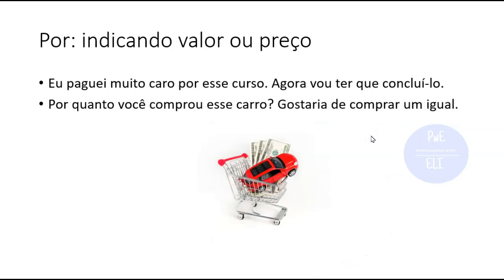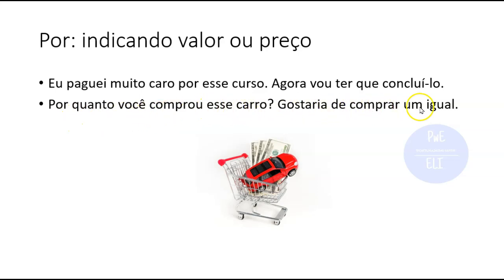Another usage is to indicate price. If you speak English as a native language, watch out for this one. When you want to express the price you paid for something, it's always POR. 'Eu paguei muito caro por esse curso' — I paid a lot for this course. 'Por quanto você comprou esse carro? Gostaria de comprar um igual' — How much did you pay for that car? I'd like to buy the same one.